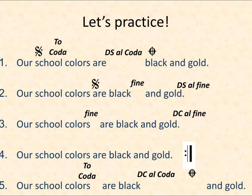Line five uses the DC Al Coda — going back to the very beginning, and then where it says 'to coda,' skipping to the coda, which is often thought of as the ending. So: our school colors — keep going — are black. Back to the beginning: our school colors — skip to the coda — and gold. Line five reads: our school colors are black — our school colors — and gold.